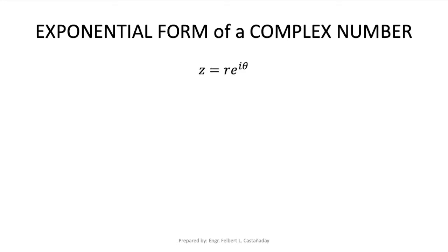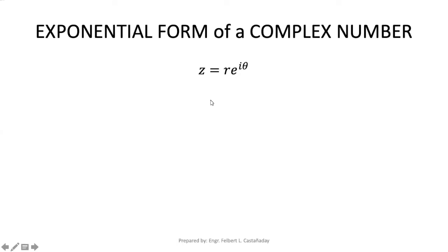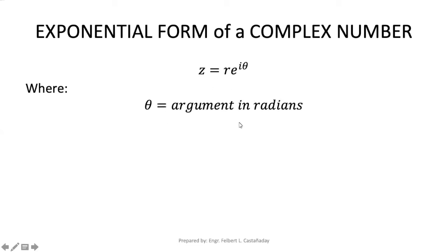For the exponential form of a complex number, this is z equals r, the modulus, times e raised to i theta, the argument. To determine r, we use the same method for finding the absolute value or the modulus of complex numbers in polar form — the square root of x squared plus y squared. Note that theta, the argument in exponential form, must be in radian measure.